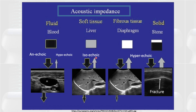Sometimes the amount of beams absorbed and reflected are close to each other, and that structure appears isoechoic — not black, not white. The liver, for example, is considered isoechoic. Some structures reflect more beams and appear brighter, called hyperechoic. The diaphragm, for example, is hyperechoic because it reflects a large amount of the ultrasound beams compared to surrounding tissues.